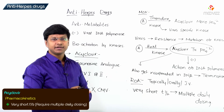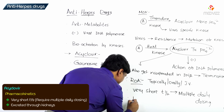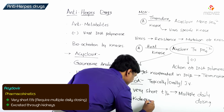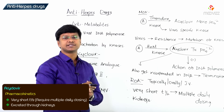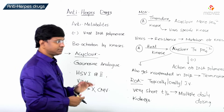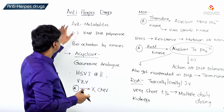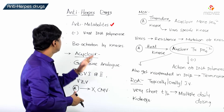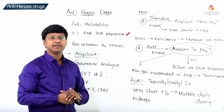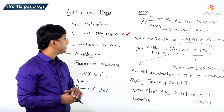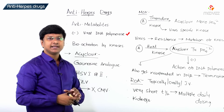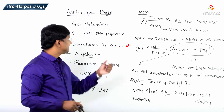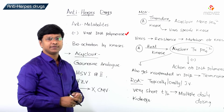Regarding excretion, acyclovir is primarily excreted via the kidneys. To briefly revise: anti-herpes drugs are antimetabolites that act by inhibiting viral DNA polymerase. They undergo bioactivation by kinases, which then leads to inhibition of viral DNA polymerase.